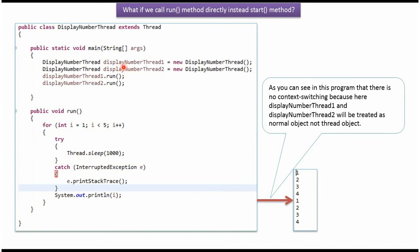Here I have created displayNumberThread1 and displayNumberThread2 objects. Then I am directly calling the run method and we will get output like this. From this output you can see there is no context switching happening.